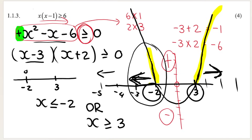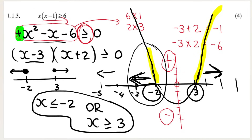Some teachers also represent the critical values on a number line: solid dots at negative 2 and 3, showing all x values including and less than negative 2, and all x values including and greater than 3. But the inequality expression is your answer. We get one mark for standard form, one mark for the critical values (3 and negative 2), and one mark each for the two answers.